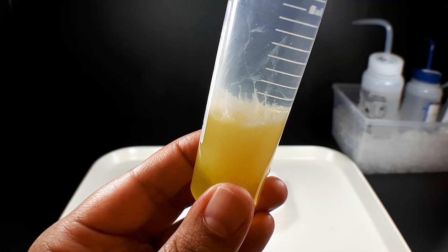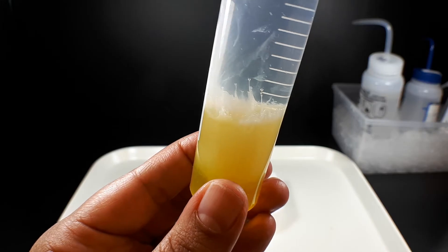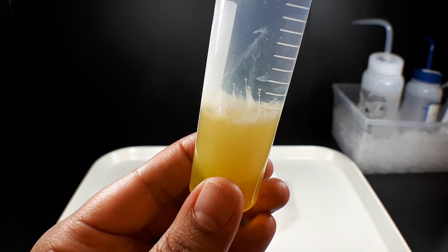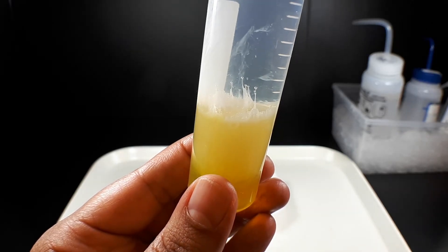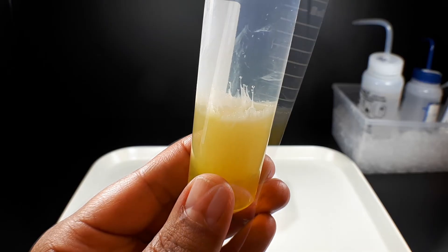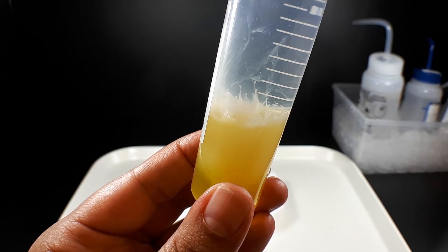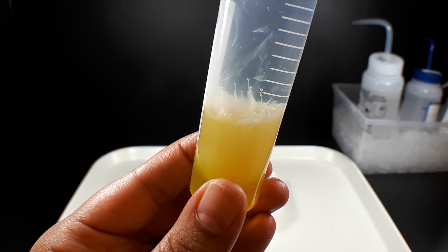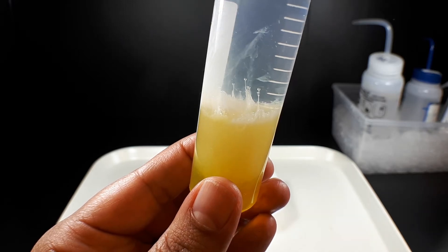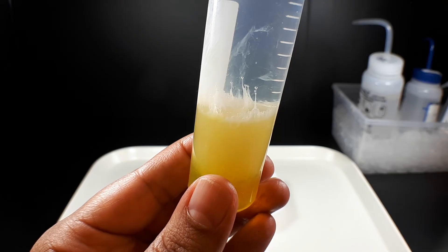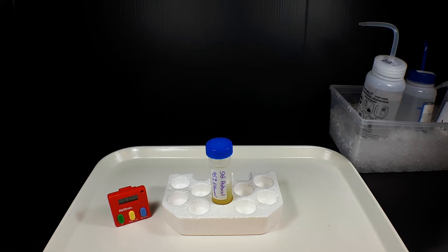You can almost immediately see the DNA start to precipitate at the interface between the extraction mixture and the ethanol. This happens because the salt that we added earlier can now neutralize the DNA and make it hydrophobic. So now, the neutralized DNA essentially wants to get away from the water extraction mixture, so it clumps together and moves into the ethanol. The DNA needs some time to fully precipitate, so we return it to the rack and let it sit for at least 10 minutes.